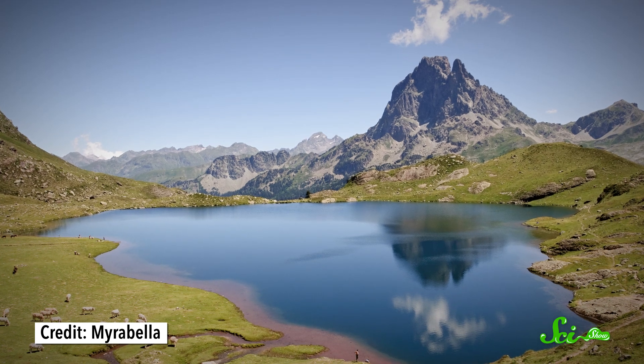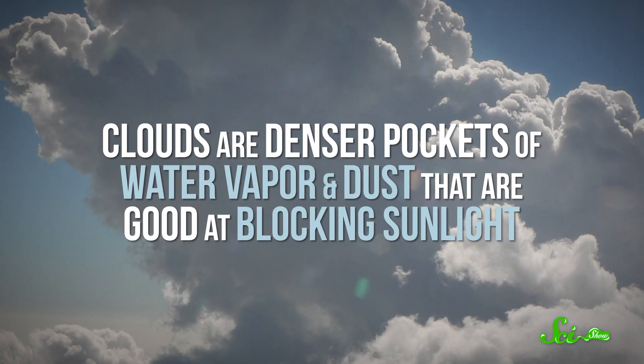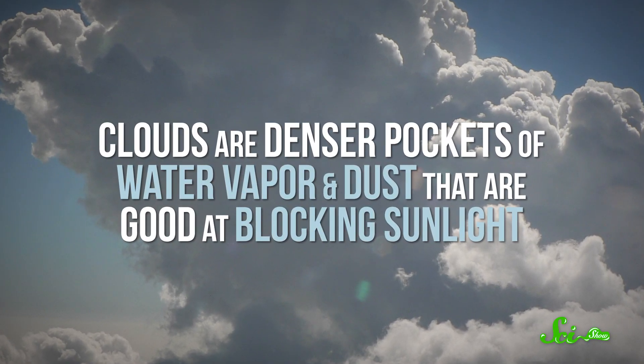Light would be bouncing off of everywhere equally, and everything would look equally lit up. These two things—particles in the air and something to block parts of the sunlight—are why clouds are so common in those Facebook pictures. Clouds are denser pockets of water vapor and dust that are really good at blocking sunlight. And the area around clouds also tends to have some dust and water. So if some light does manage to break through a hole in the clouds, it hits a whole bunch of material that scatters it.